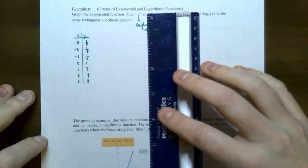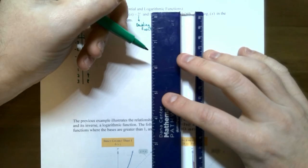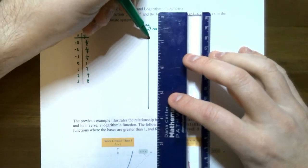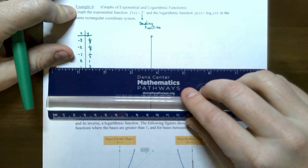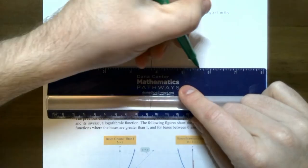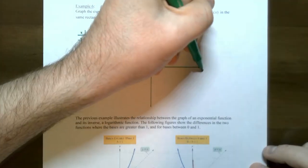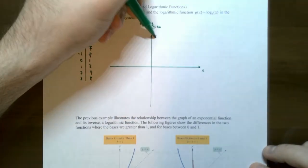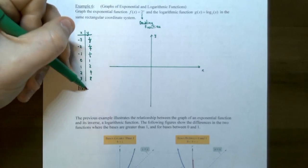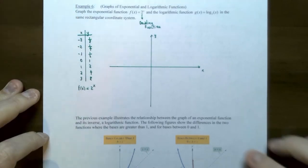So let's graph this exponential function first. This is for f(x) equals 2 raised to the x power — that's the table.